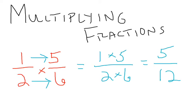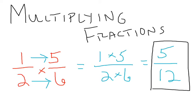Now, what I need to do — as I need to do every single time I have a fraction answer, whether it's multiplying, dividing, adding, or subtraction — is I need to make sure that my answer is reduced all the way to its simplest form and that they don't share any common factors. As we look, 5 and 12 do not share any common factors, so my answer is done. That is in simplest form, and the answer to 1 half times 5 sixths is 5 twelfths.